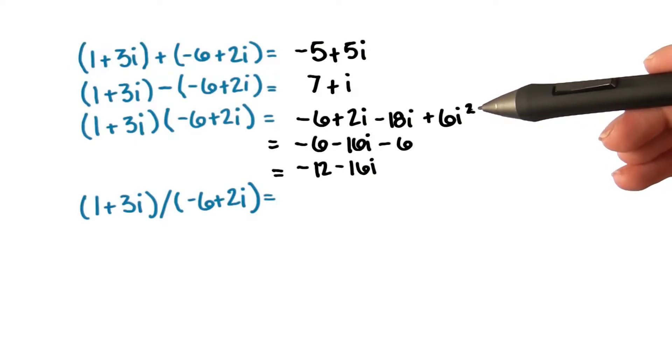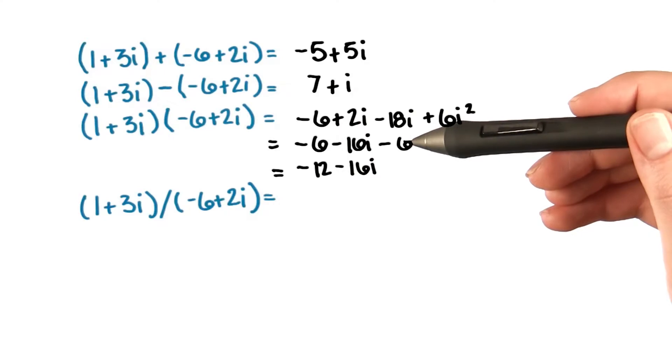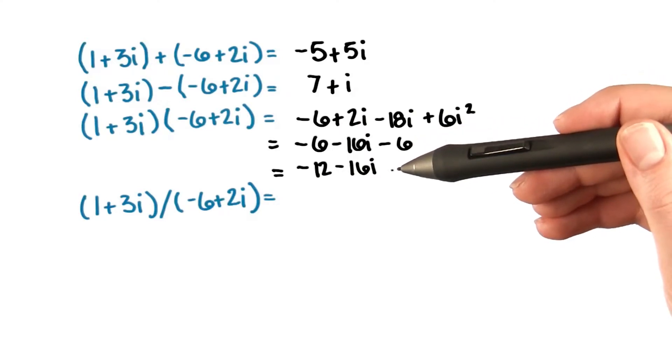which when simplified gives us negative 6 minus 16i minus 6, or negative 12 minus 16i.